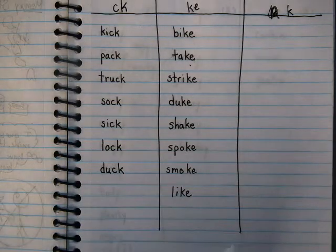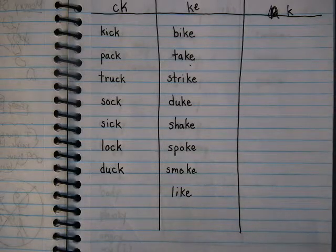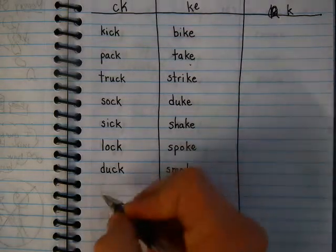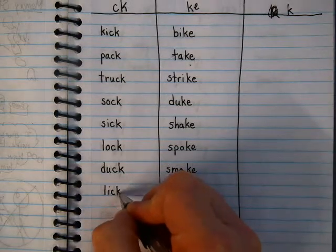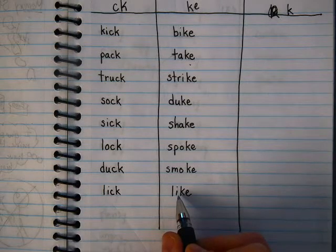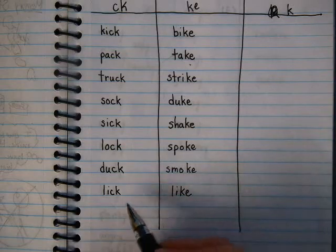Next, I want you to write 'lick.' You might lick your ice cream. So what do you hear — short or long in there? Lick. You should hear an I sound, which is short. If it's a long sound, you get 'like,' just like I did here. That's the long sound, and that's why there's the E on the end — it makes it long. The short sound is just a CK.